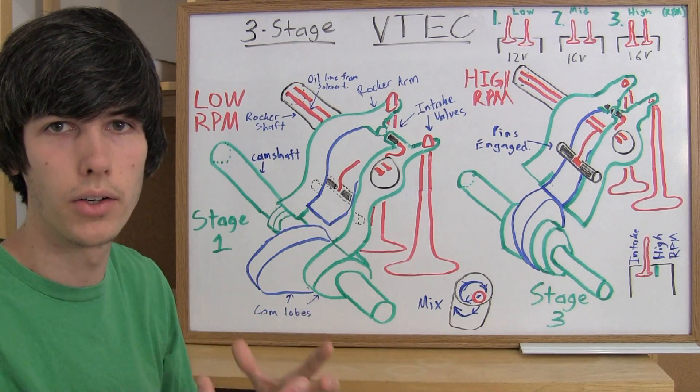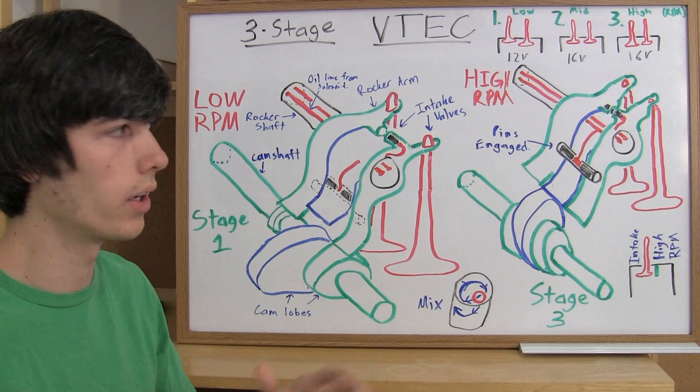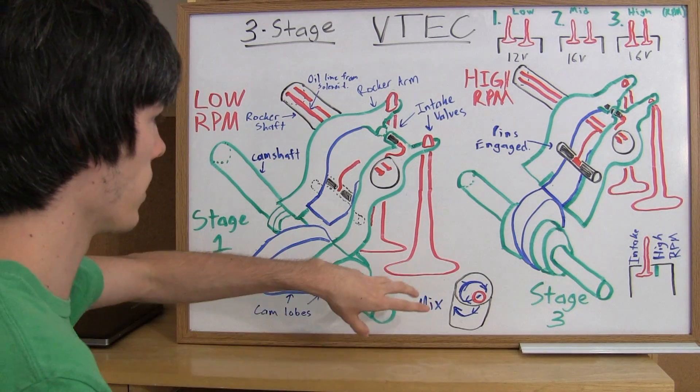So what this allows Honda to do is use an air-fuel ratio of somewhere around 20 to 1 rather than around 15 to 1 and save fuel at low range RPMs.